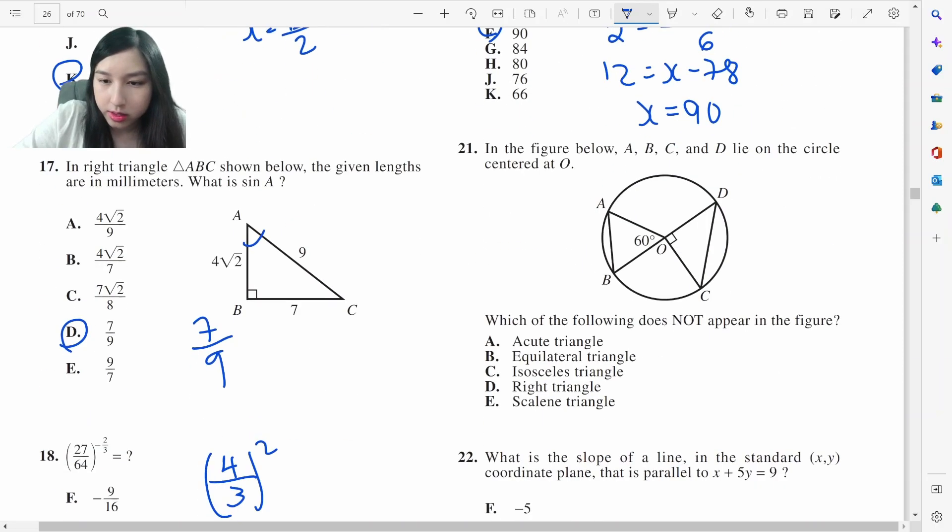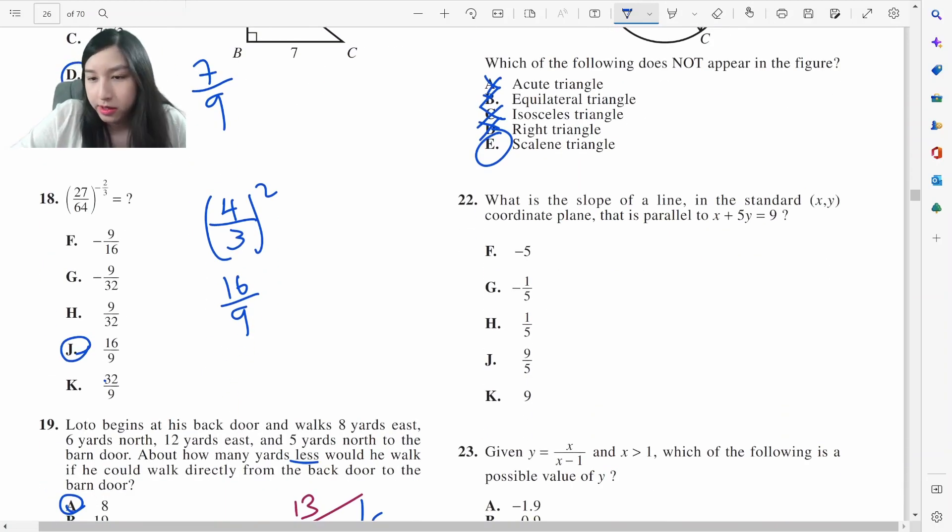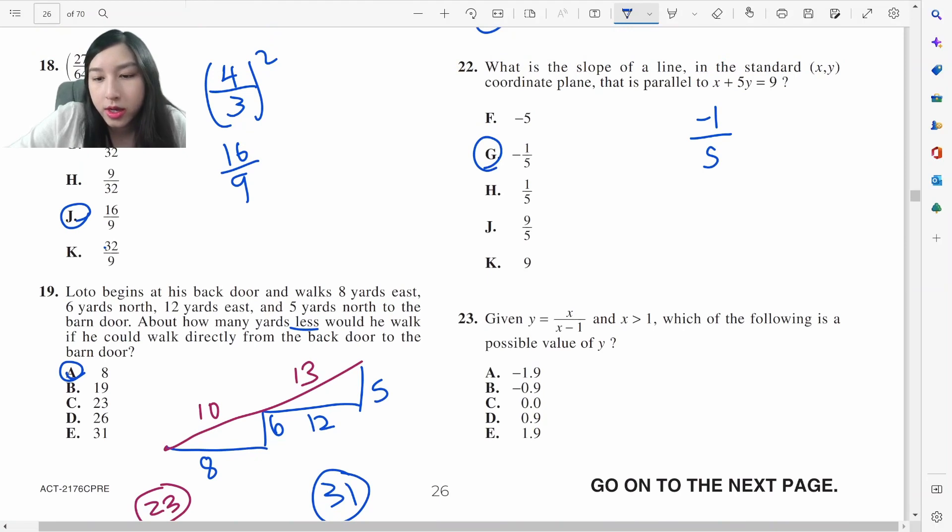This triangle is acute, it's also equilateral. I should probably put crosses so I don't get confused. It's acute, it's equilateral. All equilateral are isosceles. We have a right angle right there. It's definitely scalene because these are all isosceles. If we flip it, it's negative 1 over 5.